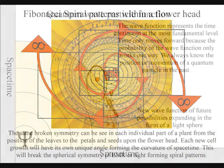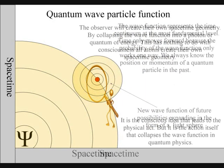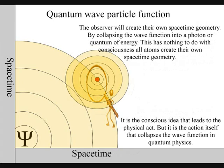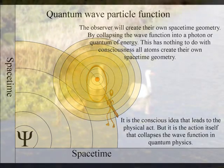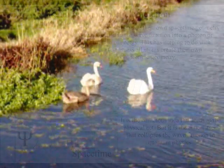It is because the observer can choose when and where to collapse a wave function that we have free will. Life will create its own ripples in the fabric of space-time, forming its own broken symmetry of its own evolutionary path or timeline.